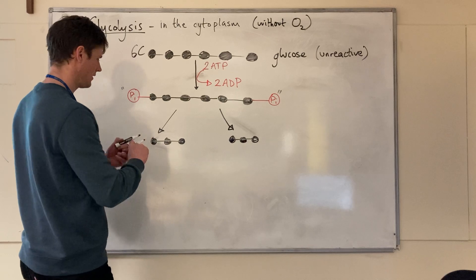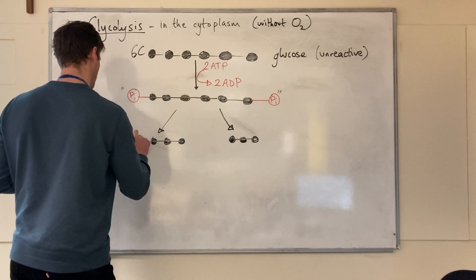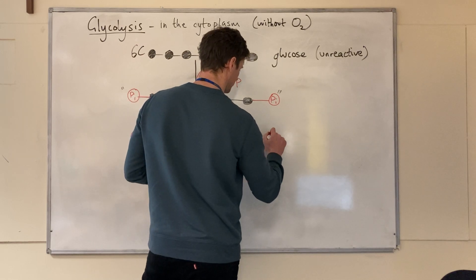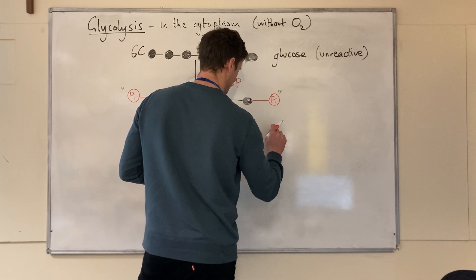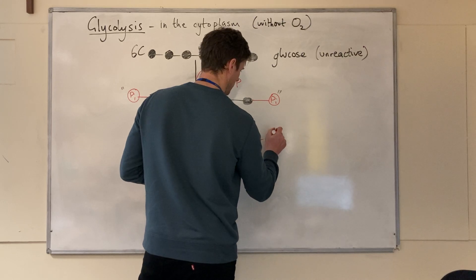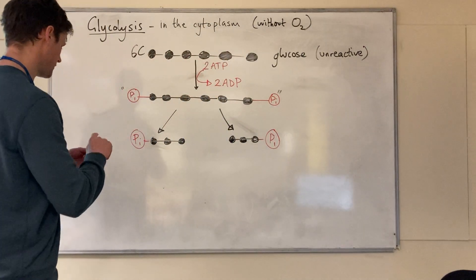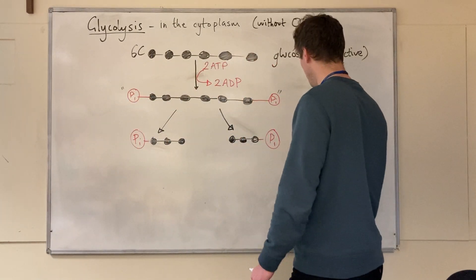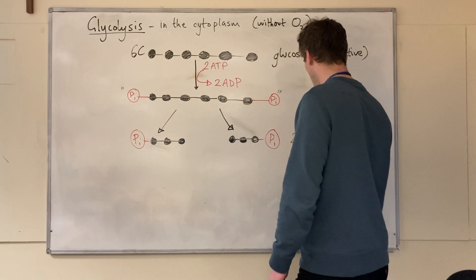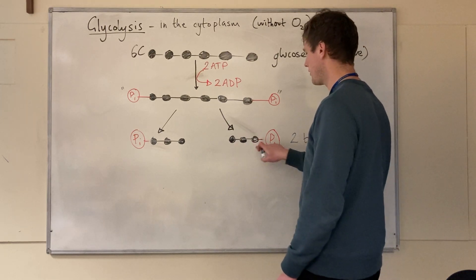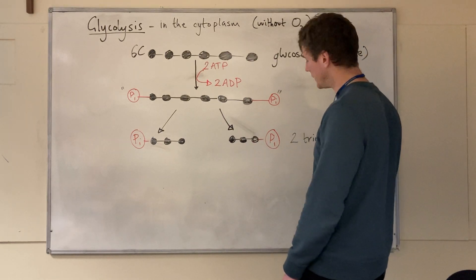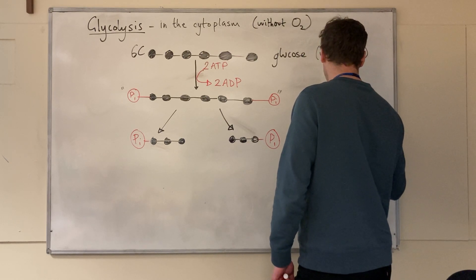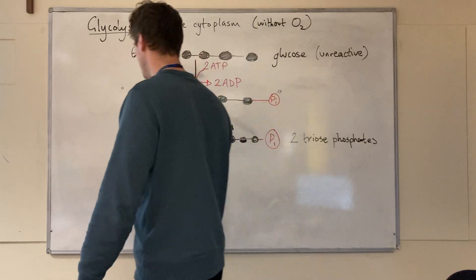Each of those three-carbon molecules has its own inorganic phosphate. This molecule is called triose phosphate. So we've now got two molecules of triose phosphate — 'tri' meaning three, 'ose' meaning sugar — two triose phosphates.